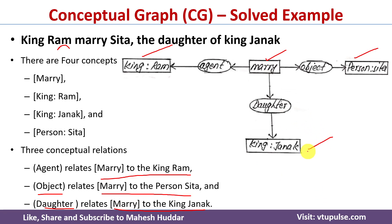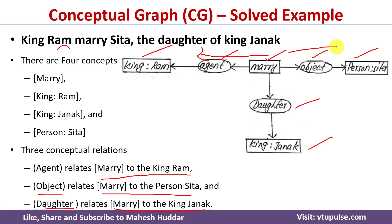The conceptual relations — agent, object, and daughter — are represented with ovals or circles. Agent relates Mary to King Rama. Object relates Mary to person Sita. Daughter relates Mary to King Janaka. Hence, the arrow is directed towards Janaka.